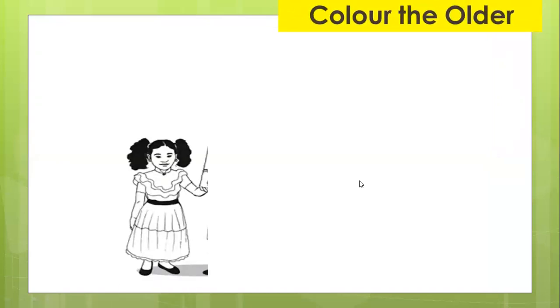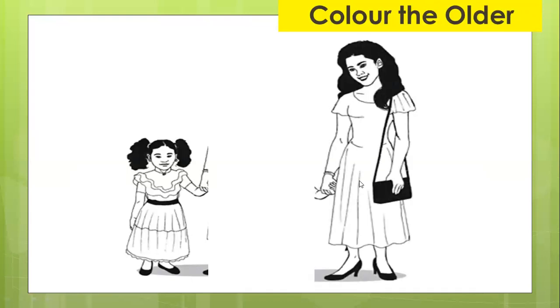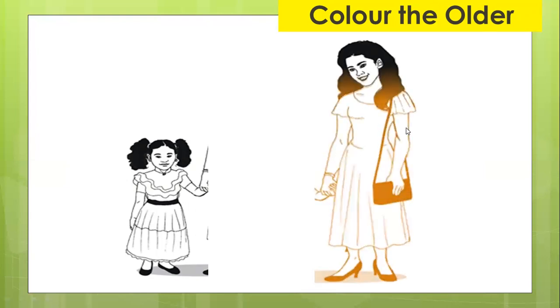Now let's practice our worksheet. Let's see whether you can do it correctly or not. Look at these two people. Who is younger and who is older? Is the mother younger or is the mother older? Who is older? Of course, the mother is older. So it's the color being older. Let's color with teacher Stephen. This one — the mother is older.